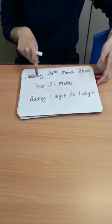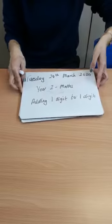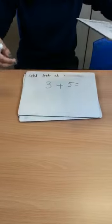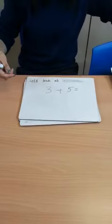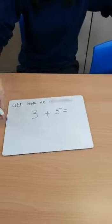Tuesday 24th March 2020, year two maths: adding one digit to one digit. We are going to look at three and five. We're going to do that by drawing the dots.